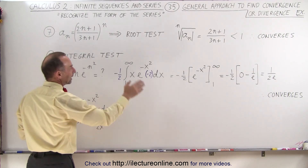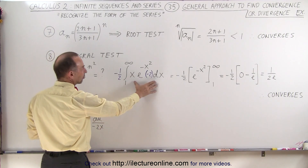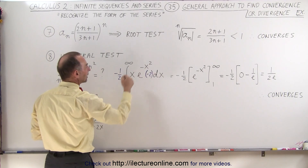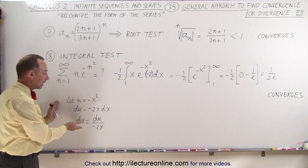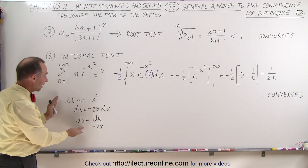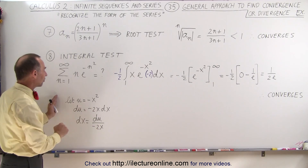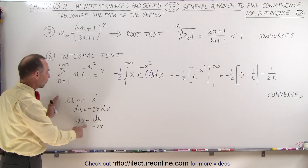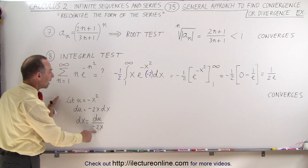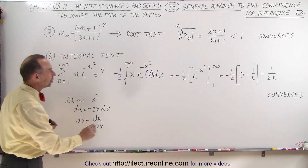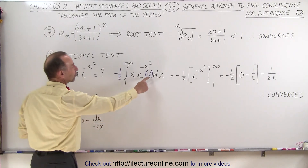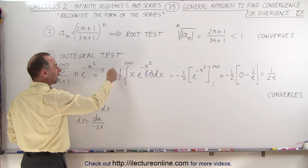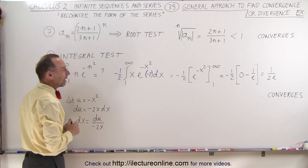When we want to integrate that, we need a proper differential, which is going to be minus 2x dx, before we can integrate e to the minus x squared. Let u equal minus x squared, so du equals minus 2x dx. That means you still need a minus 2x dx here in order to integrate, and so you have the accompanying minus one-half in front.